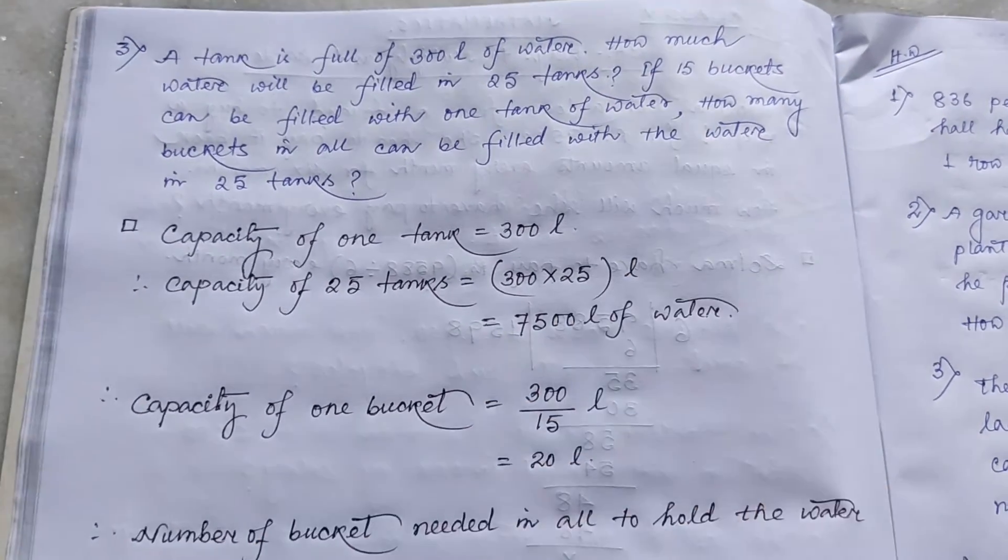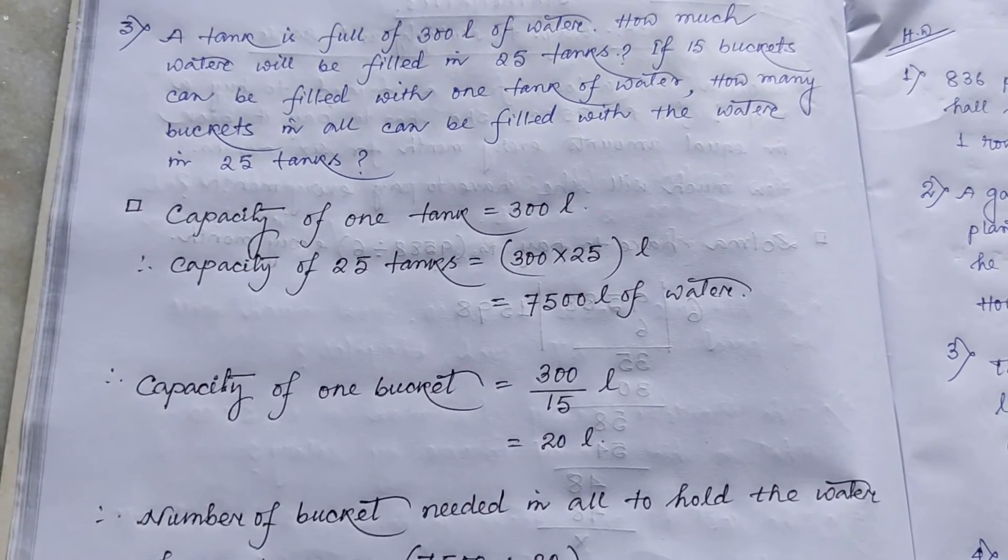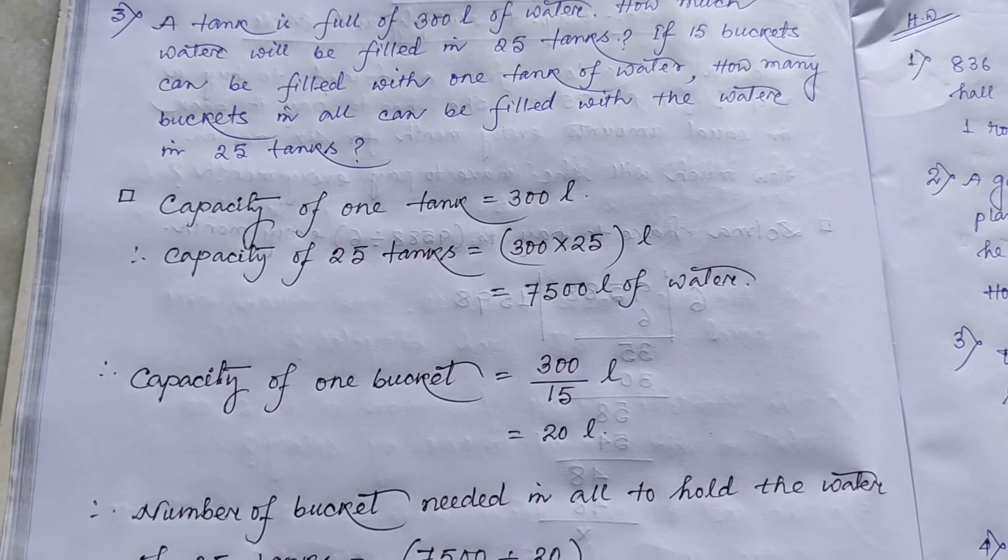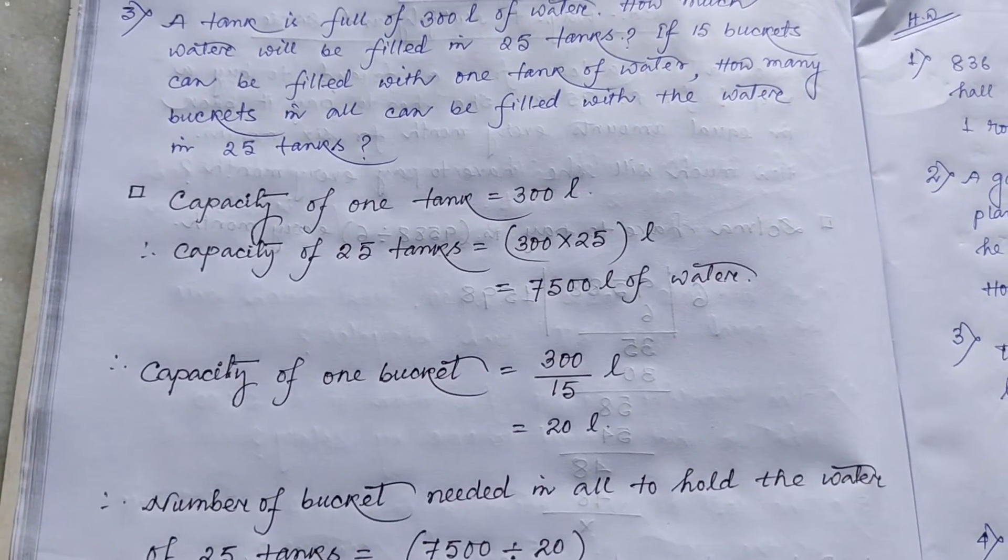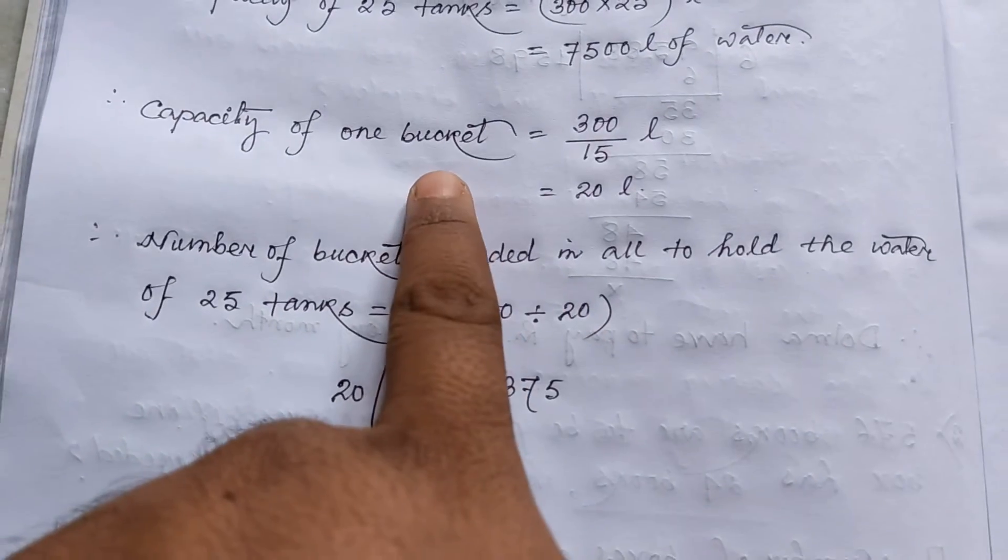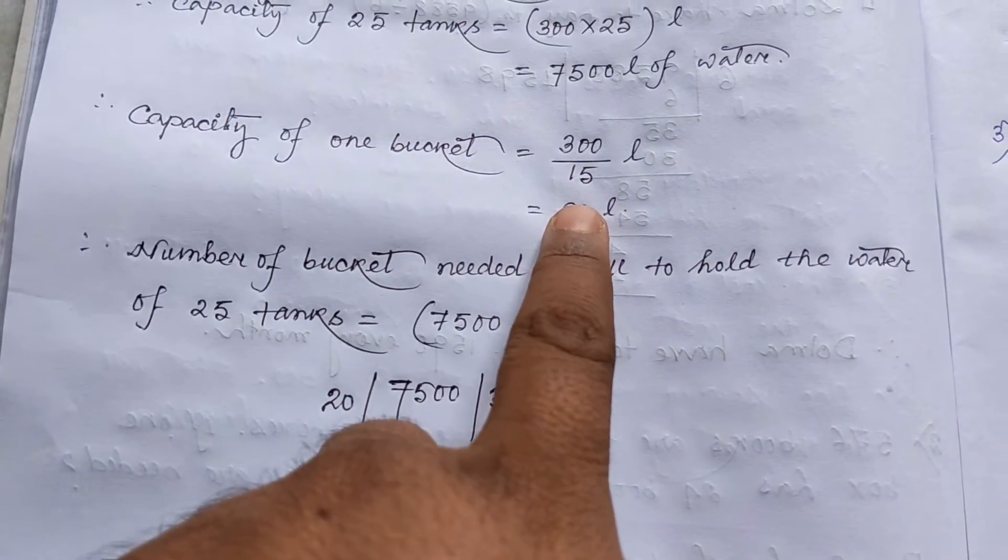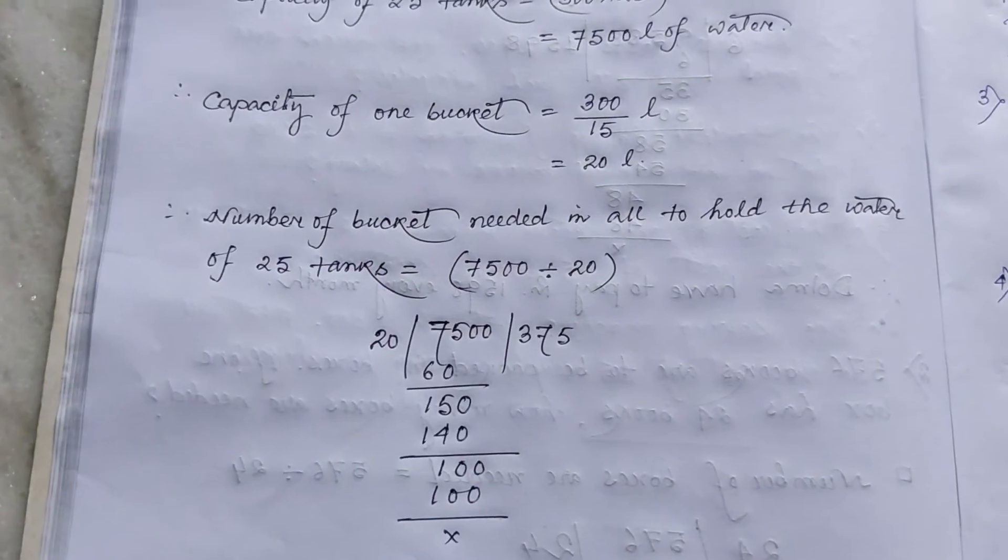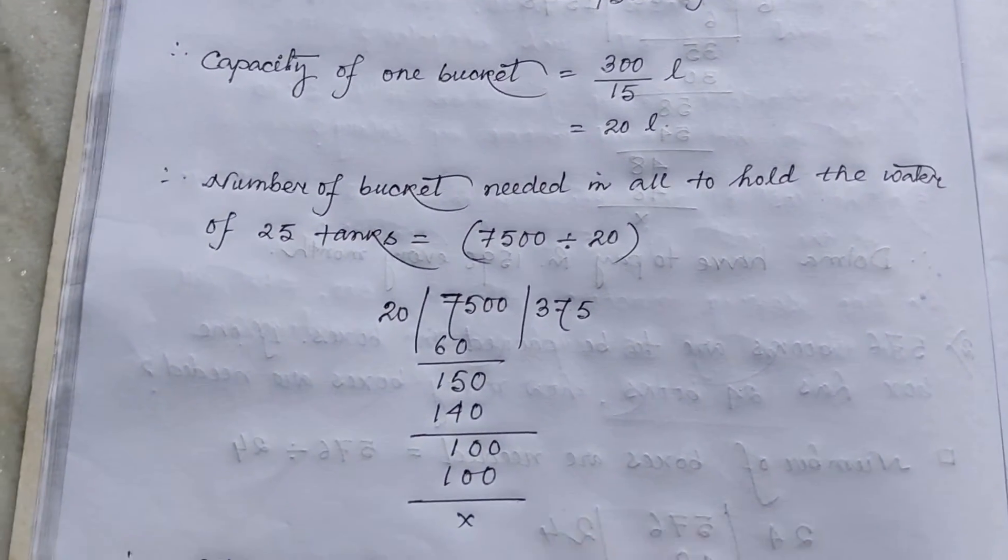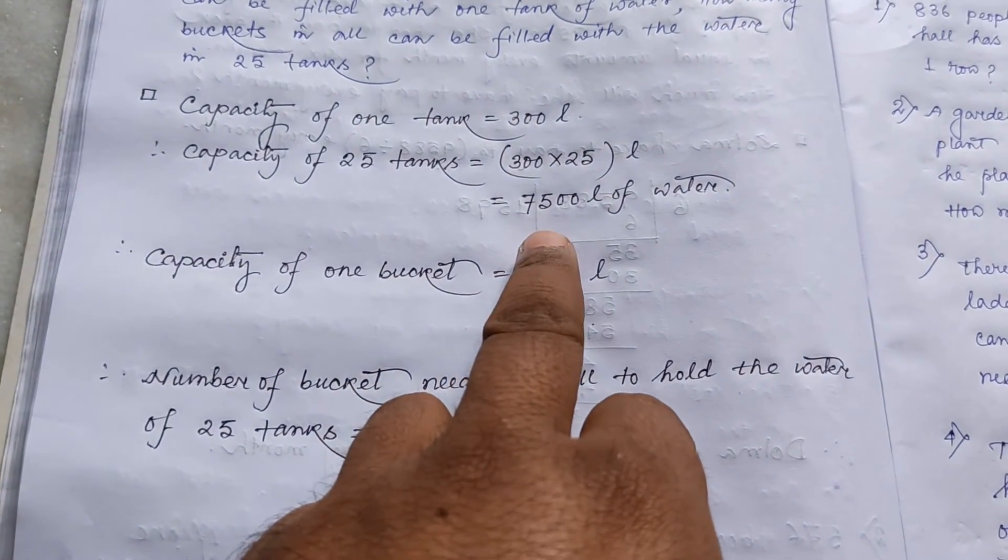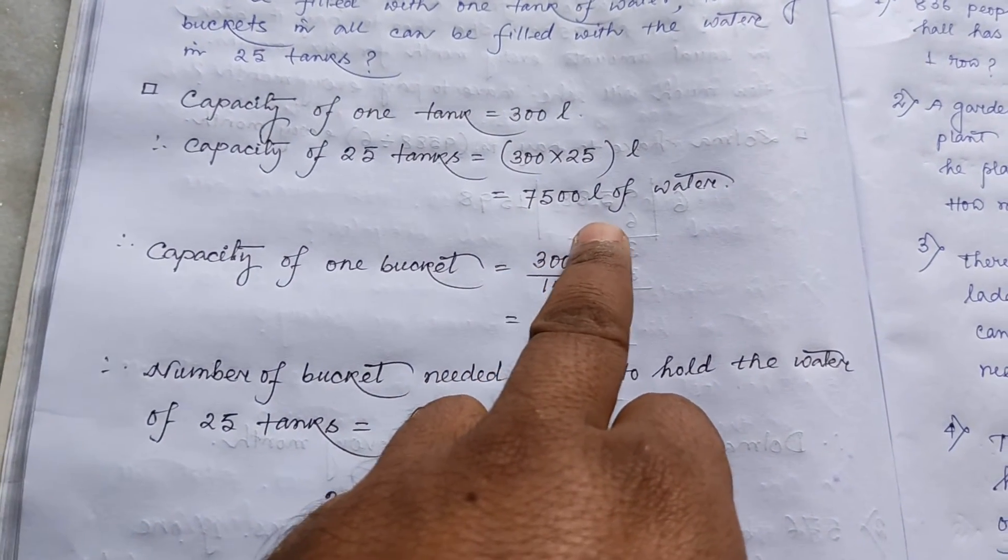Now the second part. If 15 buckets can be filled with 1 tank of water, how many buckets in all can be filled with the water in 25 tanks? So capacity of 1 bucket equals to 300 by 15 liter that is 20 liter. So number of buckets needed in all to hold the water of 25 tanks. Total quantity of water of 25 tanks is 7500 liter of water.